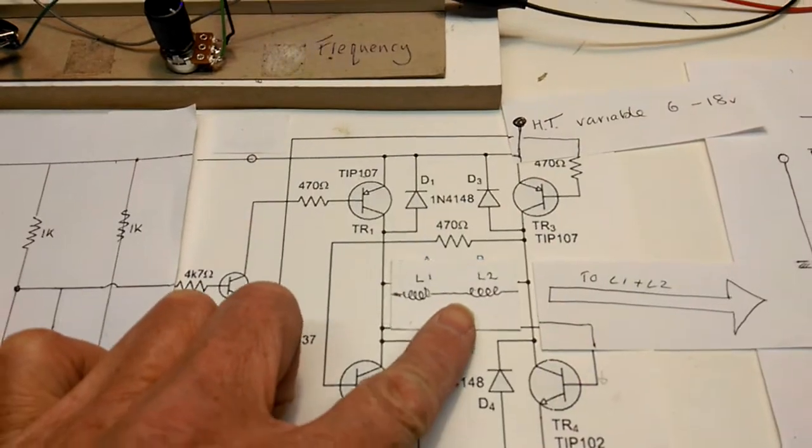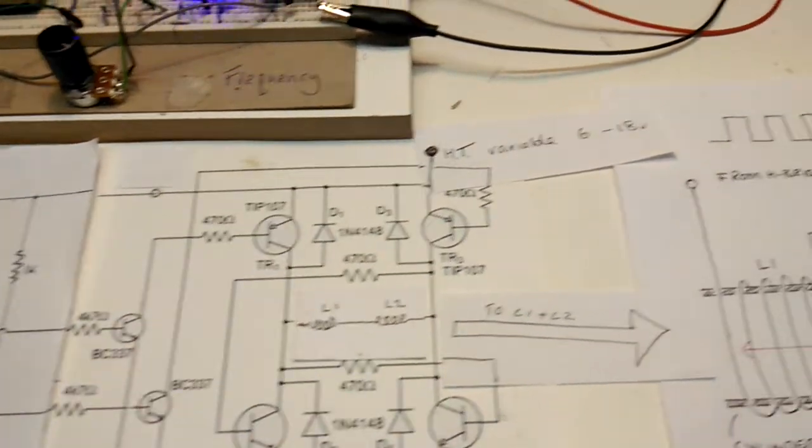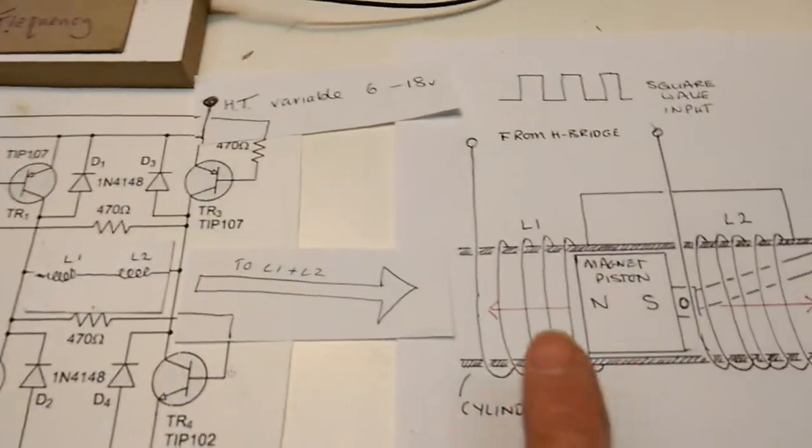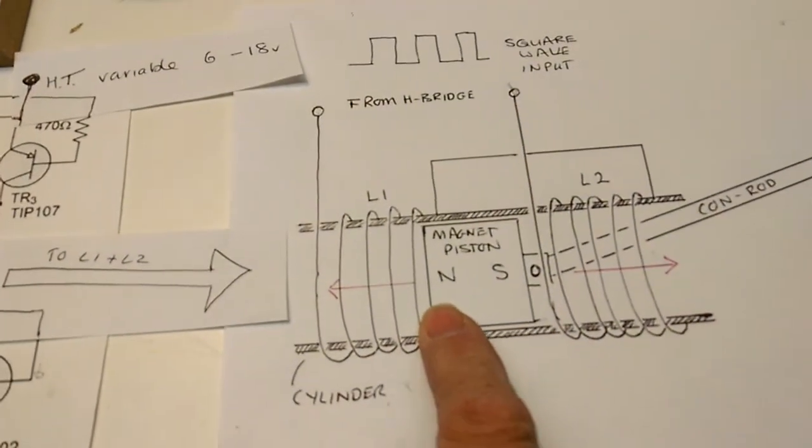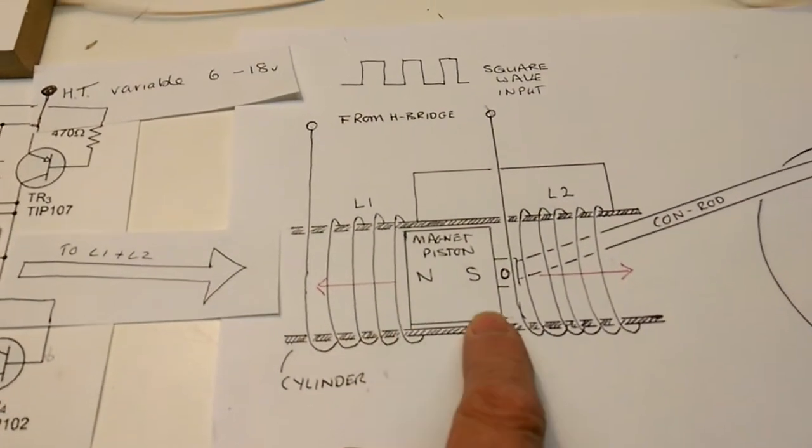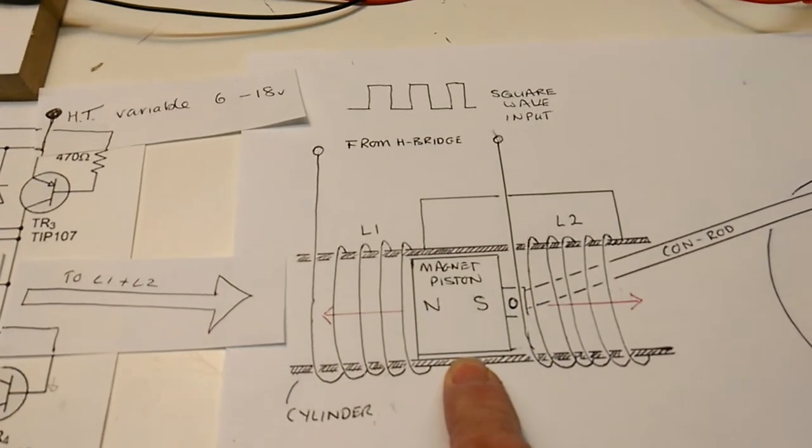But instead of that I run it on my two coils here L1 and L2, and the magnet could go in between. I've done no work on this at all for an engine.